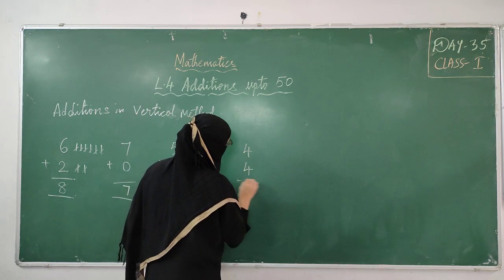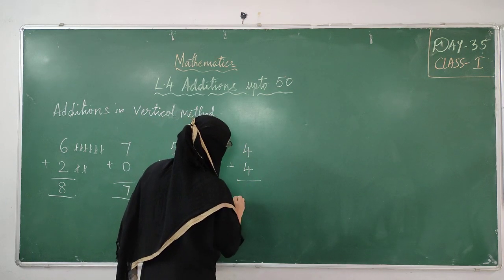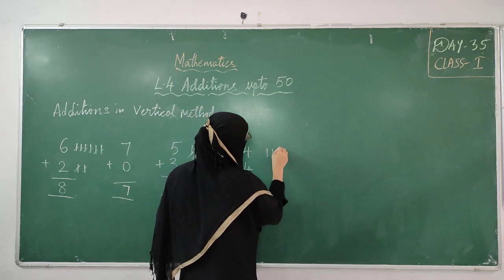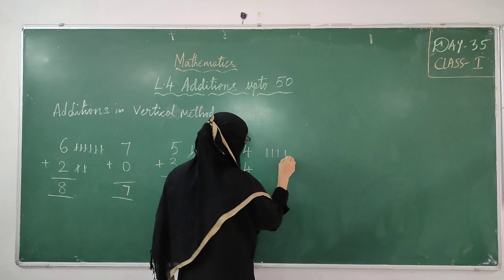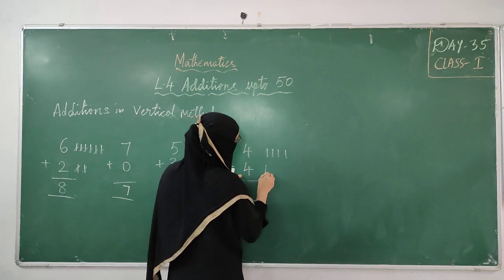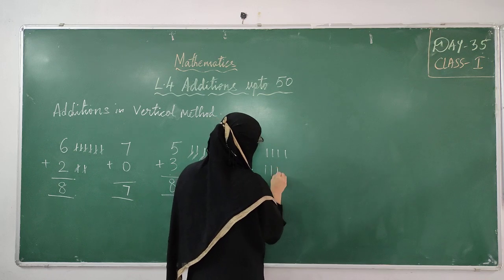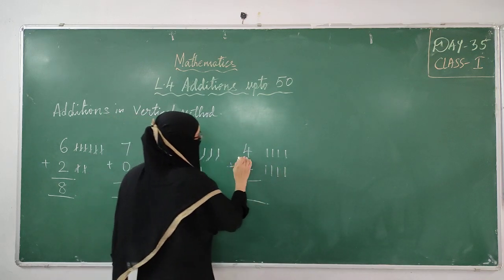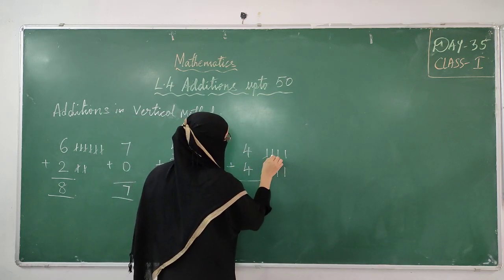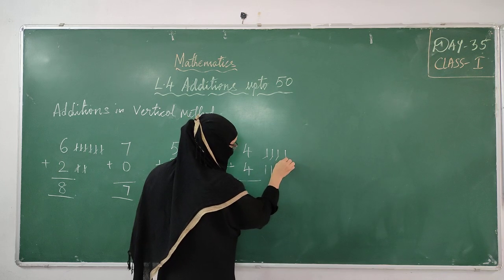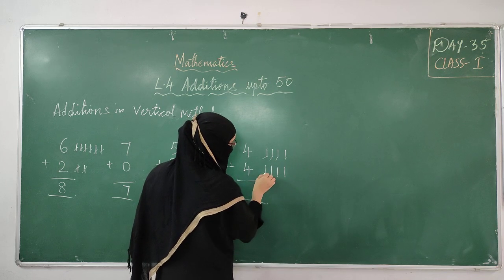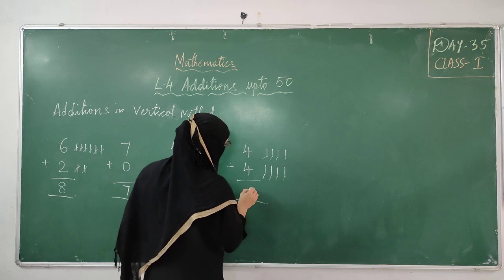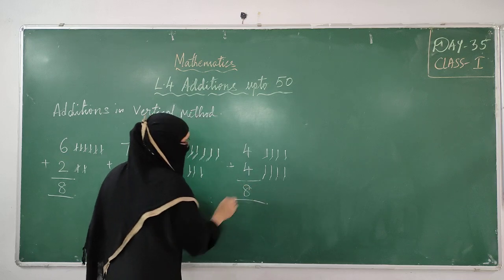Then I will take additions with the same number: 4 plus 4. Count 4 lines: 1, 2, 3, 4. Then below that, 4 more: 1, 2, 3, 4. Counting all together: 1, 2, 3, 4, 5, 6, 7, 8. The answer is 8.